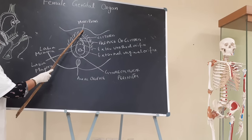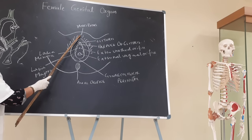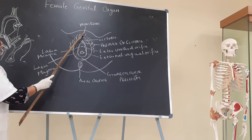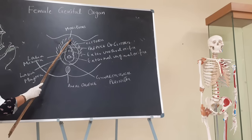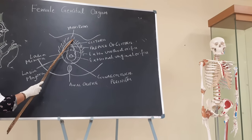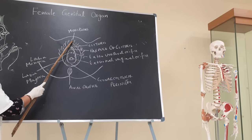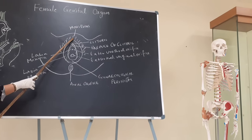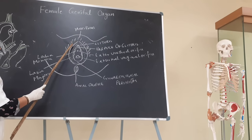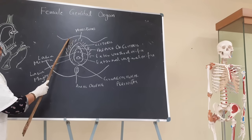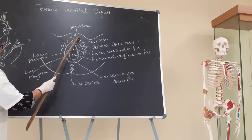The first one is the mons pubis. It is the subcutaneous elevation over the symphysis pubis, pubic tubercle, and superior pubic ramus. Below the mons pubis, the subcutaneous fat lies. Here, after puberty, coarse and crisp hairs appear, and the hairline is more or less horizontal in the case of females.